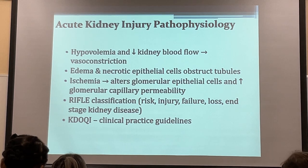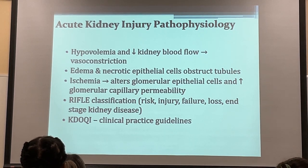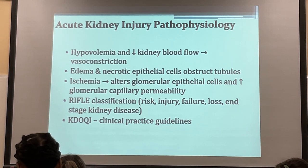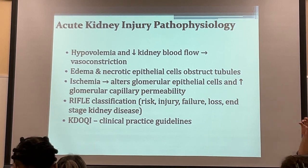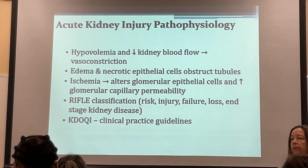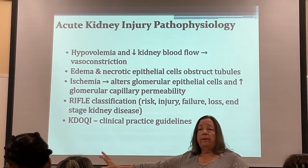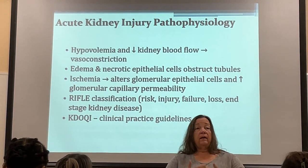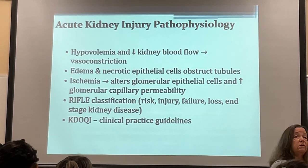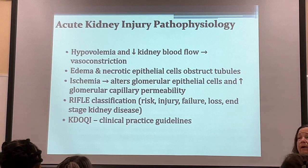The patho: hypovolemia causes decreased kidney blood flow leading to vasoconstriction and edema. Epithelial cells obstruct the tubules and nephrons. When there's ischemia, vessels become more permeable, allowing large molecules like protein and myoglobin — a result of muscle fiber breakdown and rhabdomyolysis — to pass through. You start seeing protein spilling in the urine and myoglobin causing coca-cola-colored urine.